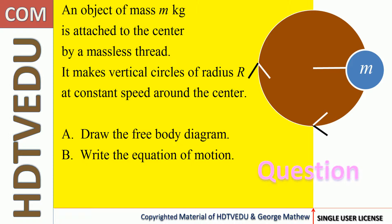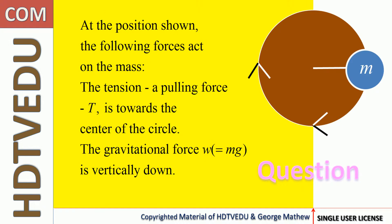An object of mass m kg is attached to the center by a massless thread. It makes vertical circles of radius r at constant speed around the center. Draw the free body diagram and write the equation of motion.